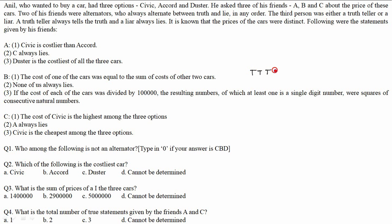Now if B is a truth teller, all statements given by B must be true. B's first statement: the cost of one of the cars was equal to the sum of the costs of the other two — this can be true. B's second statement: none of us always lies — this can be true if B is truth teller. B's third statement: if the cost of each car divided by one lakh gives squares of consecutive natural numbers, with at least one being a single digit — this can also be true.